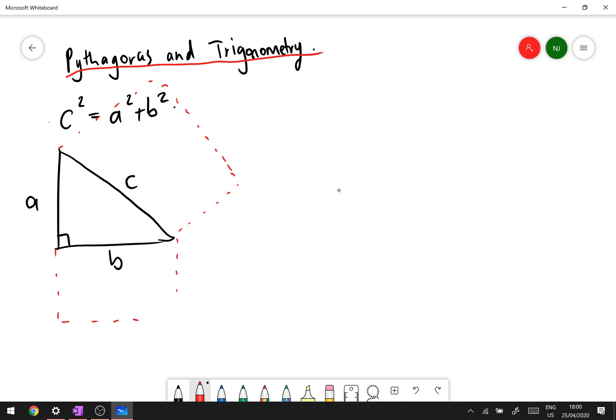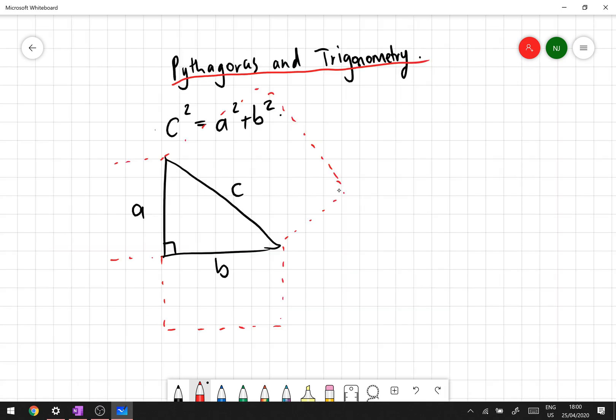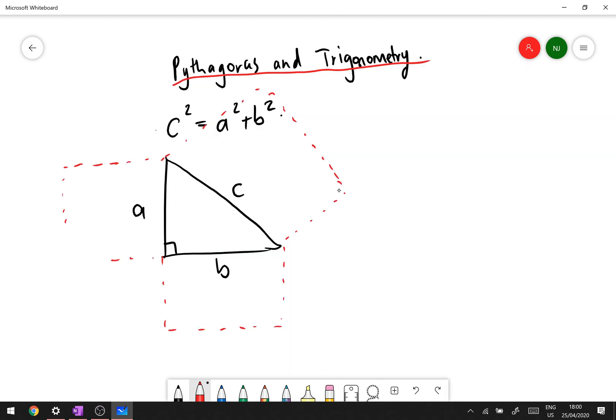Basically what that means is that if I was to make squares, well assuming that these are squares and not the rectangles that I'm actually drawing, but if we drew squares on a right angle triangle on the three sides and I worked out what the area of that was and the area of that and the area of that, then it would turn out that the c is in fact equal to the sum of the two.